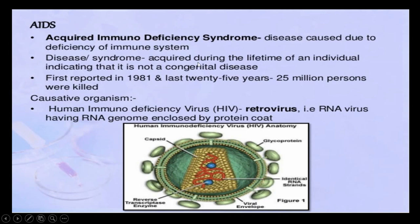AIDS was first reported in the year 1981, and in the last 25 years many million persons were killed due to AIDS. The causative organism for AIDS is the Human Immunodeficiency Virus (HIV). It is a retrovirus because the genome present in this virus is RNA — it is an RNA virus — and this RNA genome is enclosed by a protein.